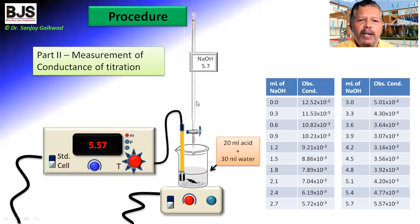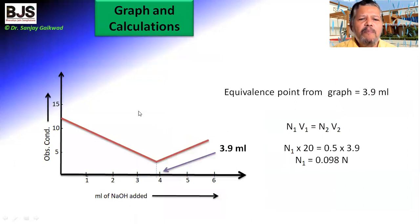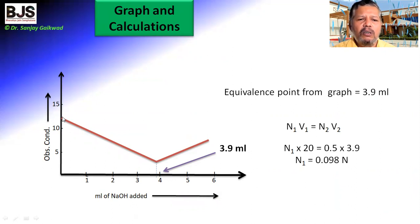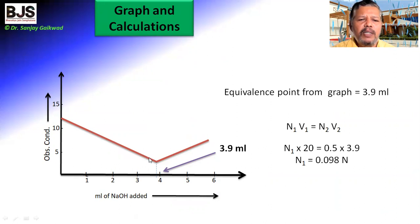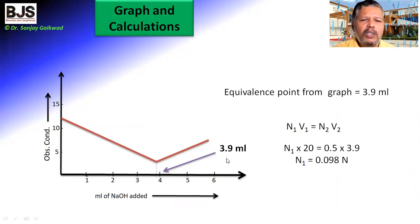These are the observations. Now we have to plot the graph of ml of NaOH added versus the observed conductance. Initially, as small quantities of NaOH are added, the conductance decreases in a straight line down to a minimum. After this minimum point, the conductance increases again — because the OH⁻ ions have neutralized all H⁺ ions, and after completion of the reaction, excess NaOH adds more ions, increasing conductance. Extrapolating to this minimum point gives the exact equivalence point, observed at 3.9 ml.